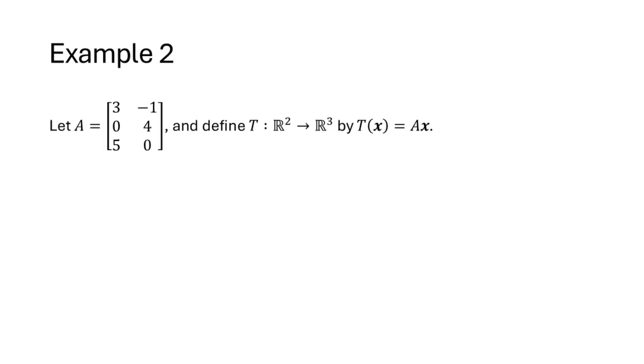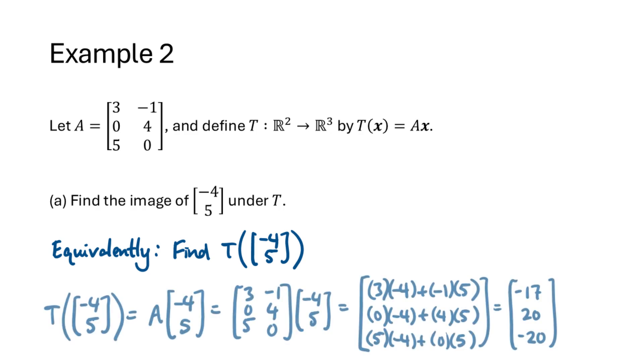Let's look at another example. So here we have a matrix A. This time the matrix is 3 by 2, which means that the domain is R2 and the codomain is R3. We've got several parts to this one. The first one is asking us to find the image of negative 4, 5 under t. Remember that that's just a fancy way of asking for t of negative 4, 5. And t of negative 4, 5 just means A times negative 4, 5. So we multiply the matrix by the vector, again going across the rows of our matrix and down the entries of our vector, multiplying and adding as we go, and we get the result negative 17, 20, negative 20.